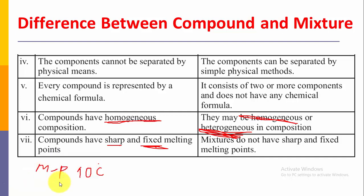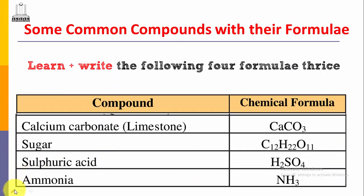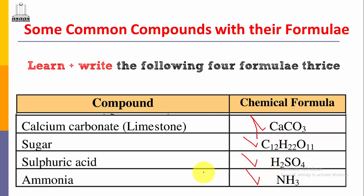So dear students, these are the seven points which are very important from the examinational point of view. You have to learn, practice and read this question — difference between compound and mixture — with special attention. Now, some common compounds with their formulas: calcium carbonate (limestone) is CaCO3, sugar is C12H22O11, sulfuric acid is H2SO4, and ammonia is NH3. Practice writing these four formulas thrice.